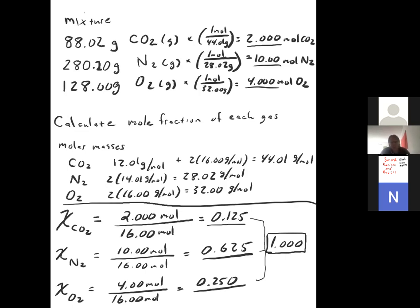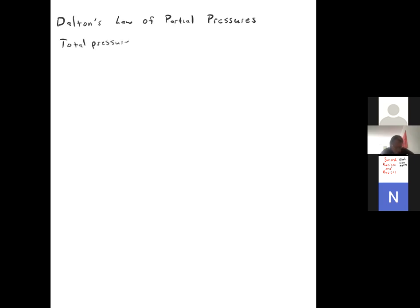That's how you calculate mole fractions of a mixture of gases — very simple, just mole calculations. The reason we do those calculations in this chapter has to do with what's called Dalton's Law of Partial Pressures. Essentially, the total pressure of a mixture of gases is equal to the sum of the partial pressures of each gas.